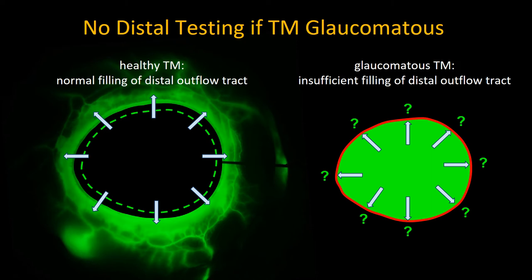As Murray Johnston described, there can be valves at the orifices, or the resistance could be elsewhere — for instance at the point where collective channels enter the episcleral veins. We just don't know.